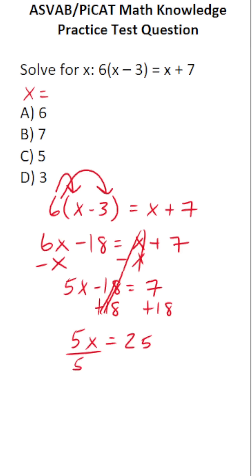And finally, to get x by itself, I'm going to divide both sides of the equation by 5. This says x equals 25 divided by 5, which is 5.